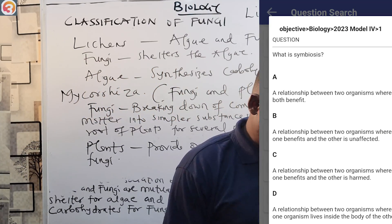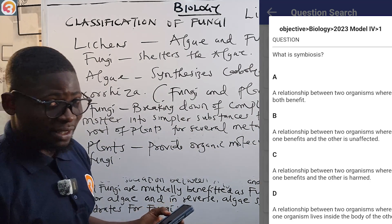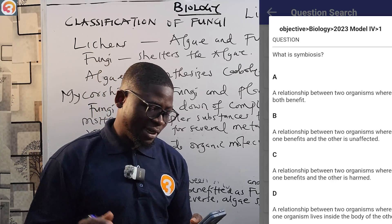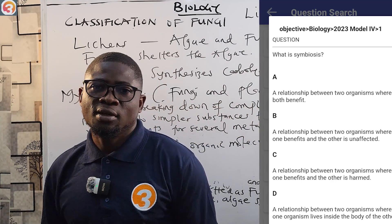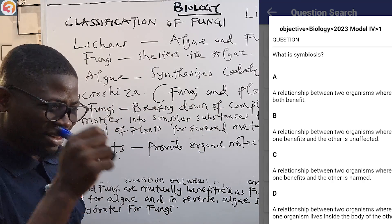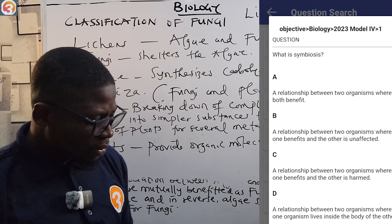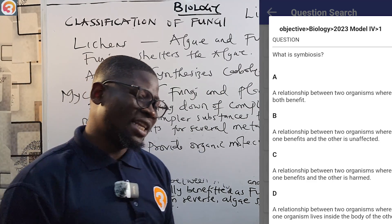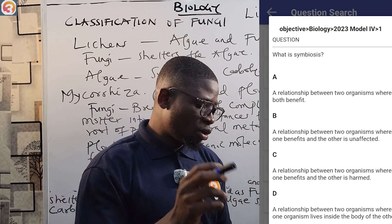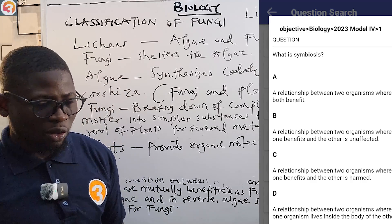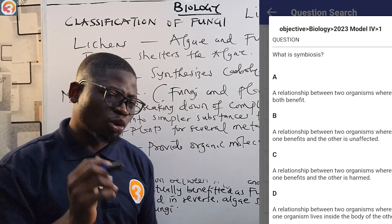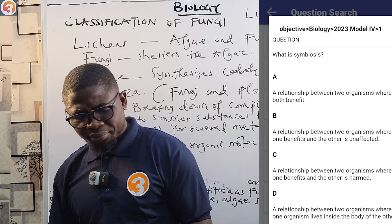The first question is from 2023, number one: What is symbiosis? Option A: relationship between two organisms where both benefit. Option B: relationship between two organisms where one benefits and the other is unaffected. Option C: relationship where one benefits and the other is harmed. Option D: relationship where one organism lives inside the body of the other. The correct answer is A.